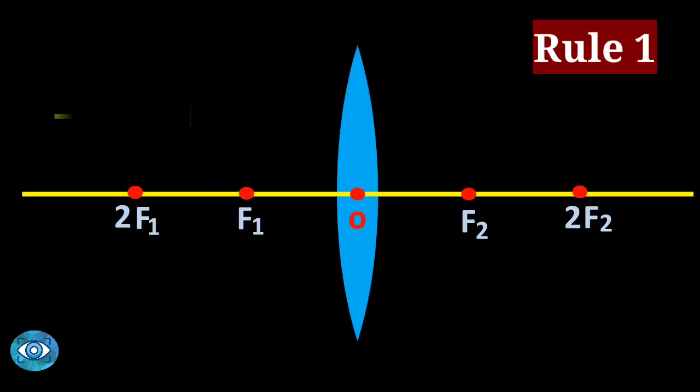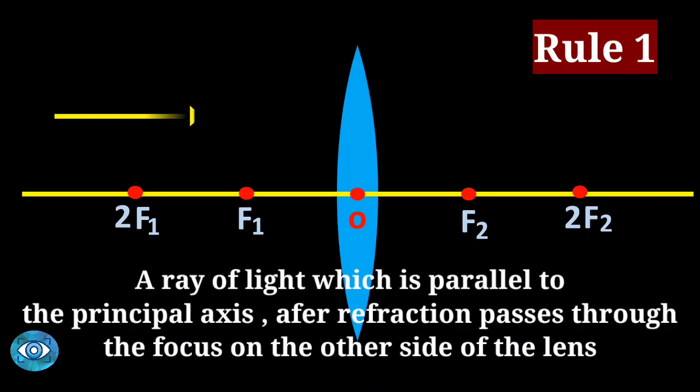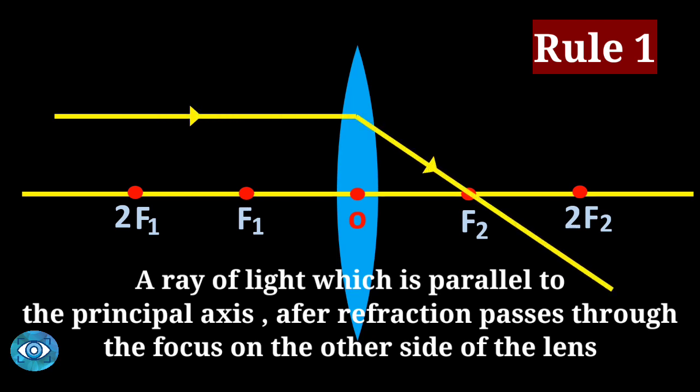Rule number one: a ray of light which is parallel to the principal axis, after refraction, passes through the focus on the other side of the lens.